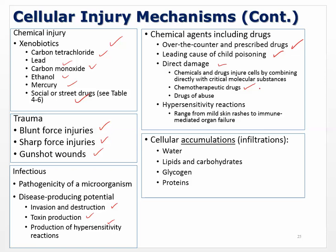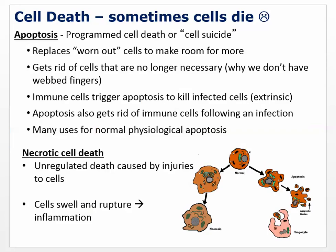Hypersensitivity reactions (like allergies) can cause immune-mediated cell injury. Cellular accumulations can also injure cells: water toxification, lipids, carbohydrates, glycogen, and proteins can all build up. Sometimes cells die because they've lived their life, gotten messed up, and will die — hopefully via apoptosis: programmed cell death, or cell suicide. This is normal. Apoptosis replaces worn-out cells, gets rid of cells no longer necessary, and occurs extensively during development — that's why we don't have webbed fingers.